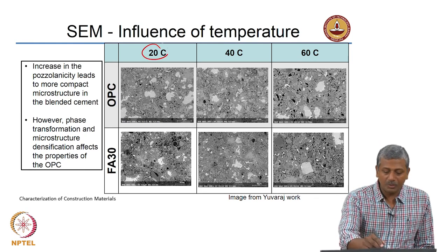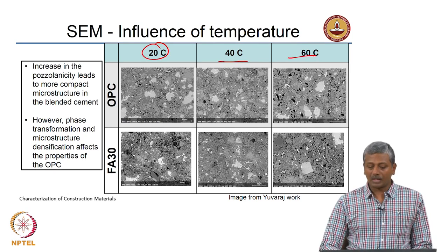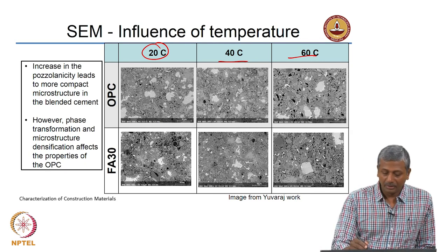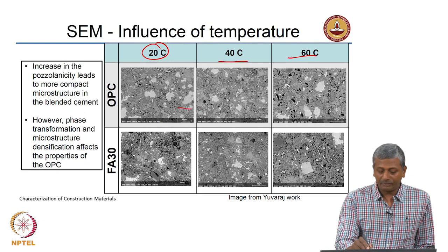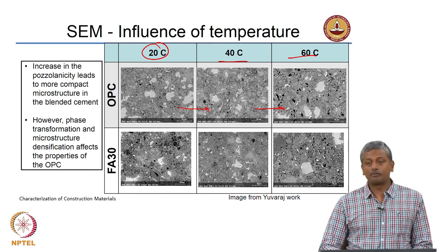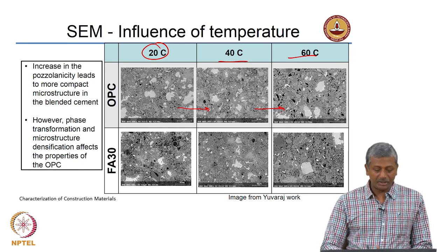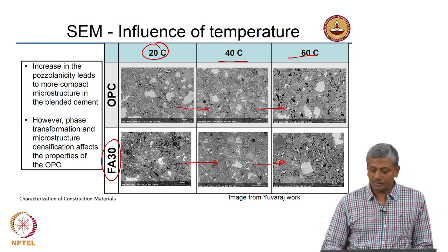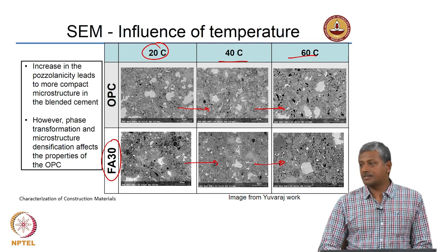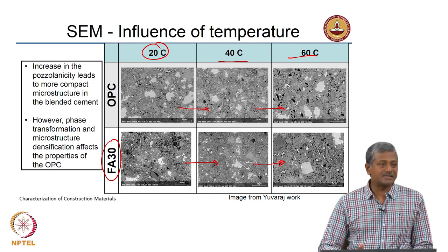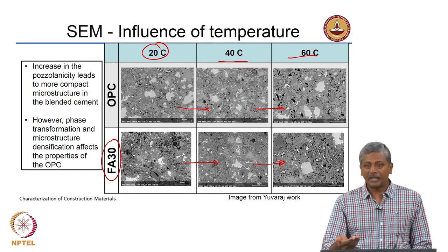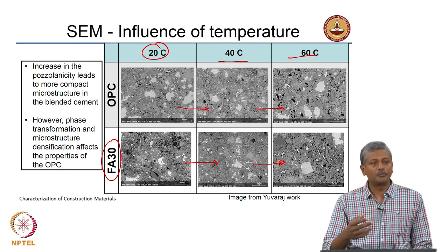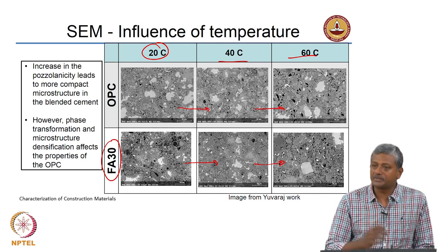From the SEM images at 20, 40 and 60 degrees Celsius, you can clearly see what happens to the porosity in the microstructure. The porosity is gradually increasing as we go from 20 to 40 to 60 degrees Celsius. However, when fly ash is used as a 30% replacement for OPC, the porosity actually seems to reduce or nearly stay the same as compared to 20 degrees Celsius. This SEM study shows that blending materials like fly ash can overcome some of the ill effects of heat curing typically felt by ordinary Portland cement based systems.